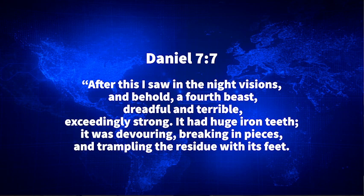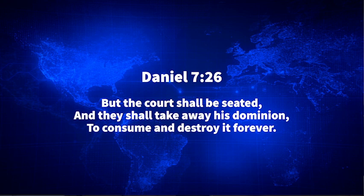'It had huge iron teeth and it was devouring and breaking in pieces and trampling the residue with its feet.' This beast is also described with ten horns. And in Daniel 7 verse 26, just as in Revelation 13 and 17, Jesus Christ the Lamb of God destroys the beast. Many theologians equate the fourth beast of Daniel 7 with the eighth beast of Revelation 13 and 17 — and they should, because both have ten horns and both are destroyed by the heavenly court sending Jesus Christ.